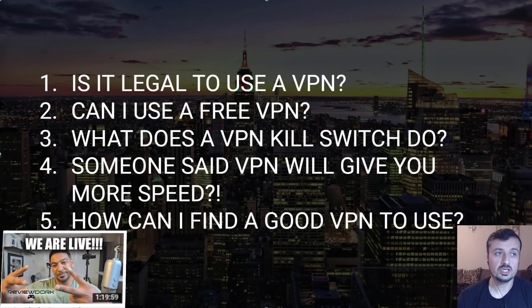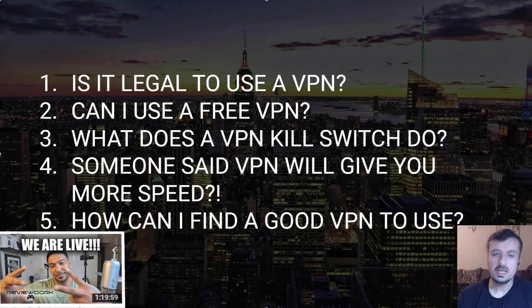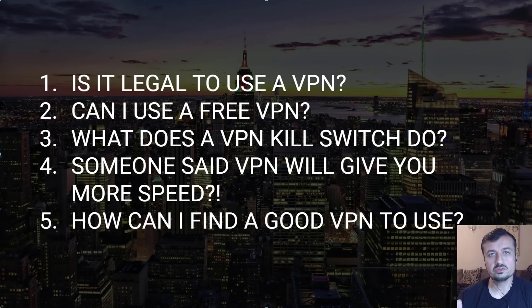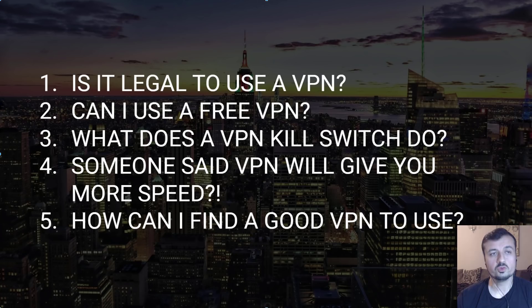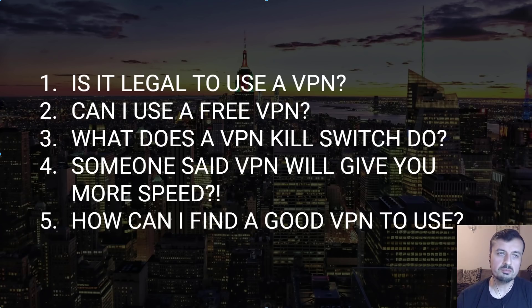Someone mentioned that a VPN can actually give you more speed — I saw this on a review channel, great guide, definitely check them out. The reason is that certain ISPs are known to throttle specific protocols. If they detect you're using peer-to-peer or torrents, they'll limit your bandwidth. If you use a VPN, they can't see that traffic. So if your ISP was throttling you down to 20 Mbps, switching on a VPN should restore your full speed — so using a VPN in those specific conditions can actually speed up your connection.